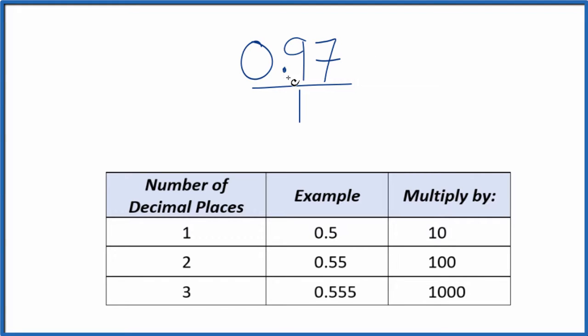We need to get 0.97 to be a whole number. And to do that, I can see we have two decimal places. If we have two decimal places, we can multiply by 100, and that'll give us the whole number there. So 100 times 0.97, that equals 97. And now we have a whole number.